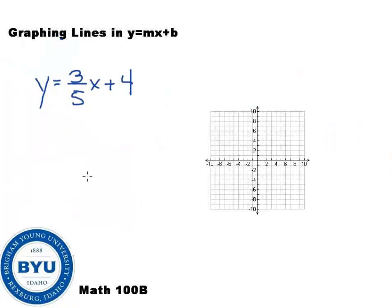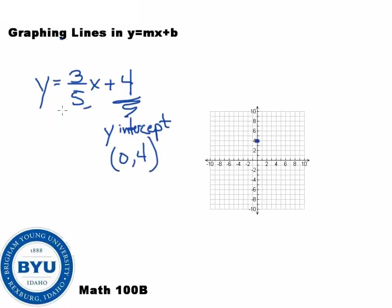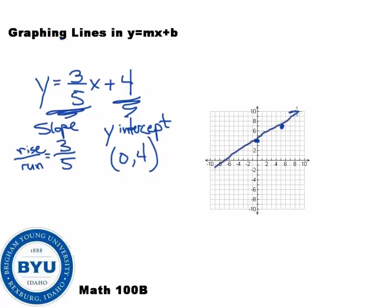Let's do a problem with a fraction to show the same idea. Find your slope and y-intercept first. The y-intercept is 0, 4 — always graph that first. The slope is three-fifths. Using slope as rise over run, this tells me to rise 3 and run 5 from my y-intercept. So from the y-intercept, rising 3 and running 5, I find my next point. Then I connect the lines. That's how we do those types of problems.